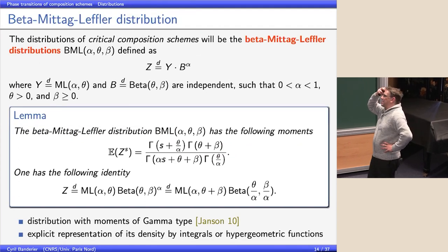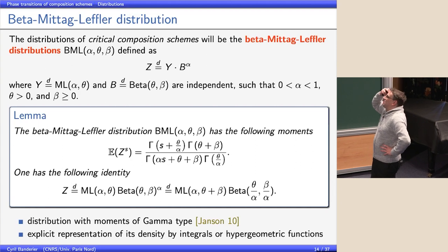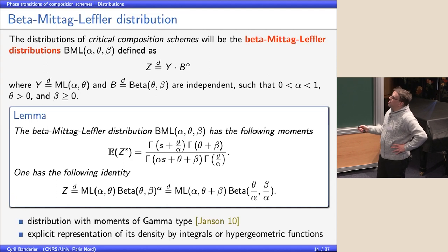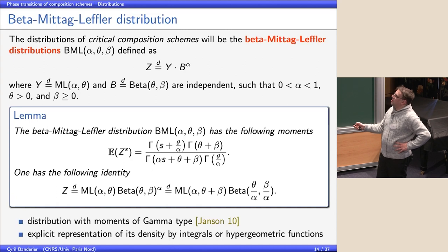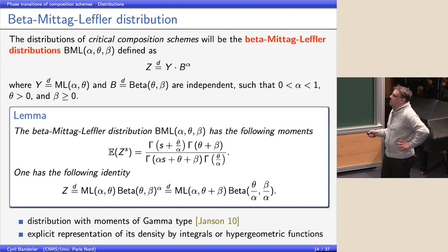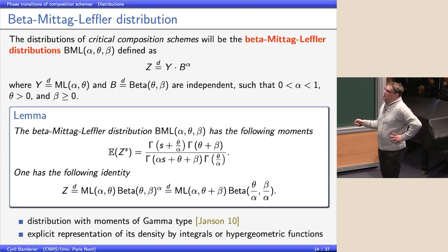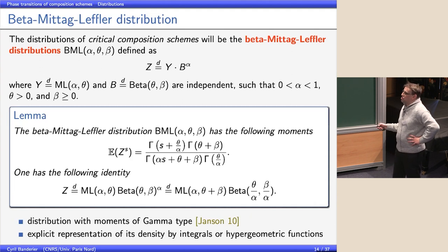One more distribution appearing in this work is the beta Mittag-Leffler distribution, which is exactly a product of a power of a beta distribution times a Mittag-Leffler, with linked parameters. This is what we prove to be a new universal limit law appearing for all these problems. The moments of such distributions are given by products of gamma functions with nice identities. It is in the family of gamma-type distributions analyzed in a big survey by Svante Janson.